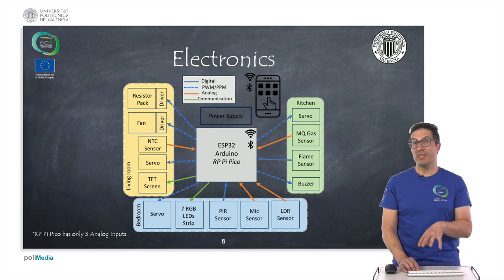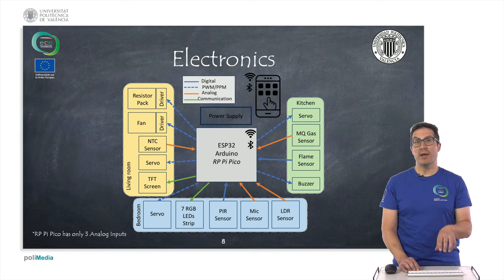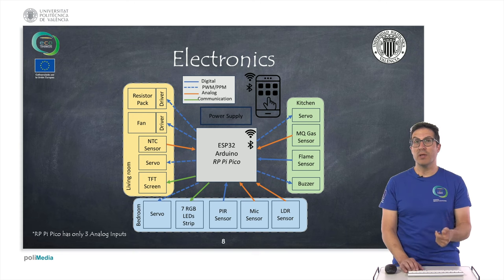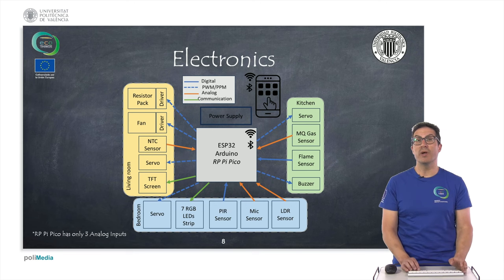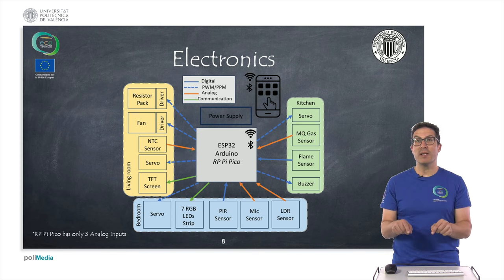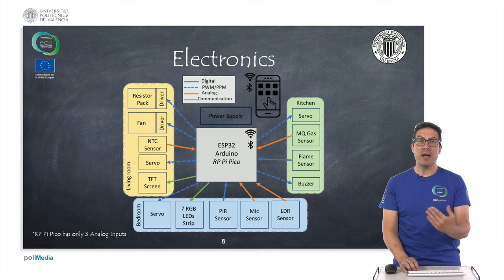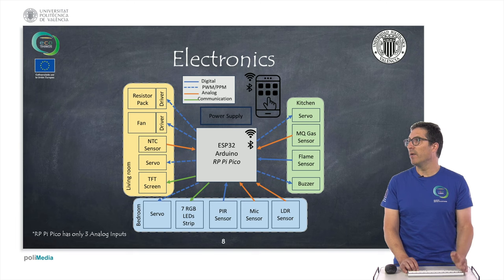We are going to use a set of electronics. The core of the application will be a microcontroller — which could be an ESP32, an Arduino, or a Raspberry Pi Pico. Each instance of the house will have a set of sensors and actuators connected to the microcontroller according to their signal types. The goal is to develop a smart application to remotely monitor and control the house, activating or deactivating electronics such as the heater, the fan, or whatever is needed.